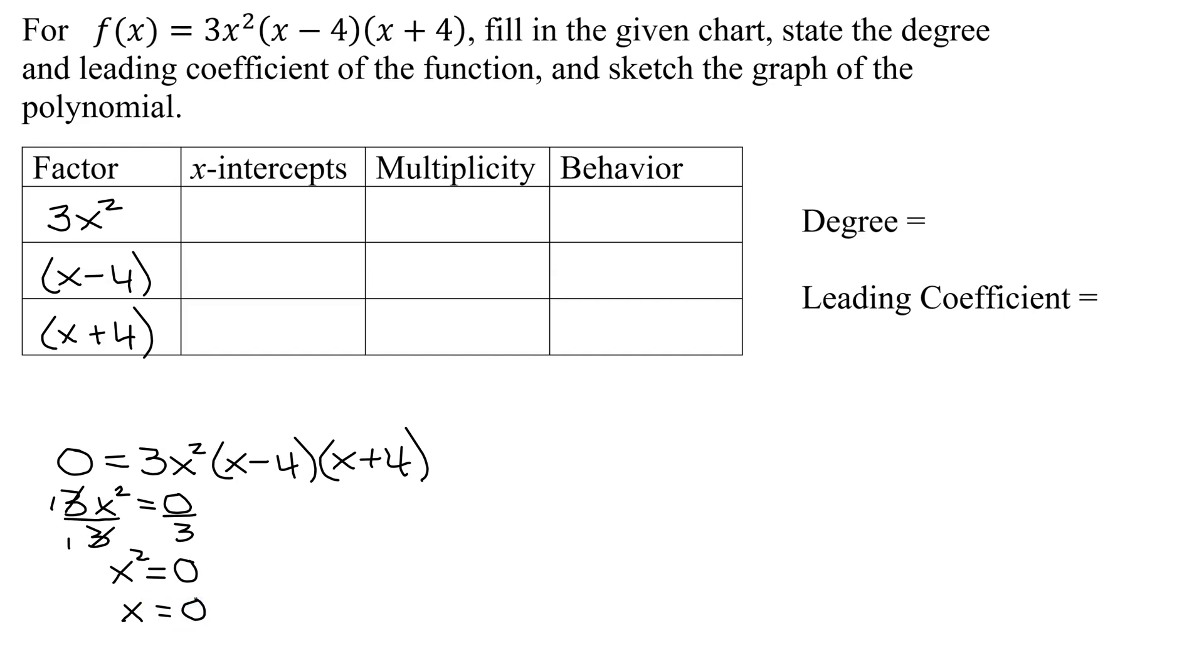So the x-intercept that goes with 3x squared happens when x equals 0. The multiplicity comes from the exponent on that factor. So the multiplicity of this one is 2.